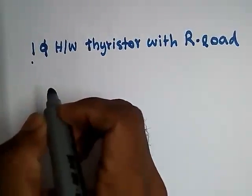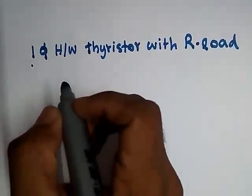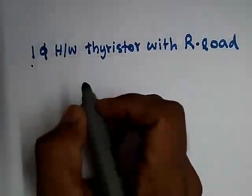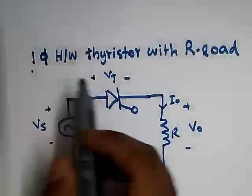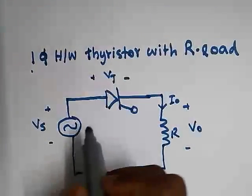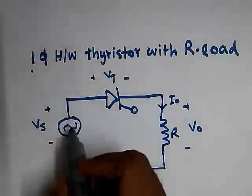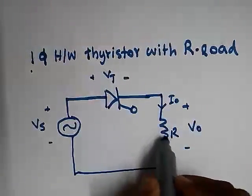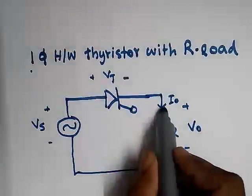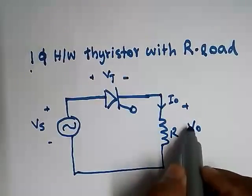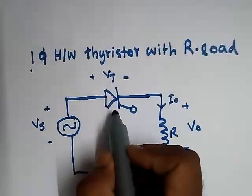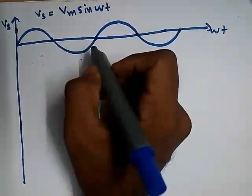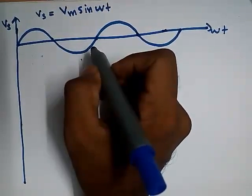In phase control rectifiers, the first thing we have to study is the single phase half wave thyristor with R load. Here is a circuit of single phase half wave thyristor with R load. This is the voltage source, this is the thyristor, and this is the resistance load. I0 is the load current and V0 is the output voltage. Through waveforms we have to analyze this thyristor circuit.